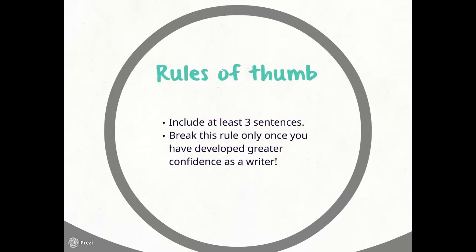As a rule of thumb, a paragraph should have at least three sentences. Although there are certainly exceptions to this rule, they are more often seen in creative writing or when an author is trying to emphasize an important point — for example, by making a single sentence a paragraph. In beginning scholarly writing, you are advised not to break the rules just yet. As you develop greater confidence as an educational researcher and writer, you will begin to determine which rules can and should be broken, and when.